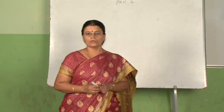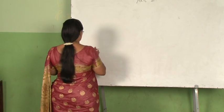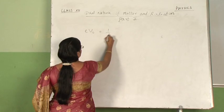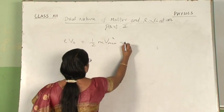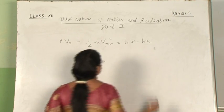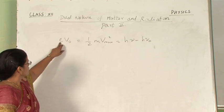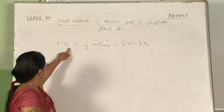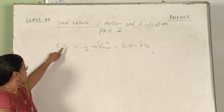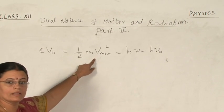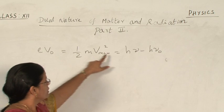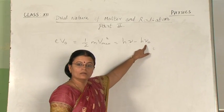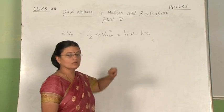Yesterday we studied Einstein's photoelectric equation. According to that, eV₀ equals half mV²max, which equals hν minus hν₀. In this equation, eV₀ is the work done on the electron due to stopping potential V₀. The product of electronic charge and stopping potential is a measure of maximum kinetic energy attained by the photoelectrons emitted. Here, hν is the incident energy carried by the incident photon, and hν₀ is the work function — the minimum energy required by electrons to come out of the metal surface.